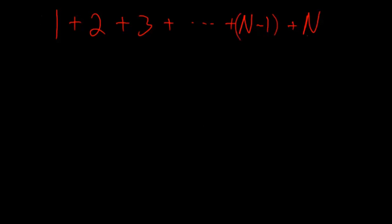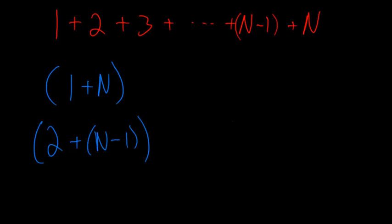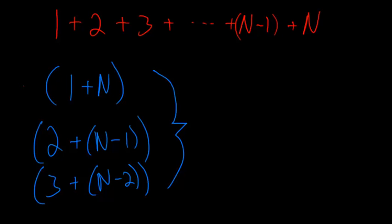So we can use the same idea where we add the first and the last, and the second and the second to last, and so on. So we have 1 plus n, and then we'll add 2 plus n minus 1, then we add 3 plus n minus 2. And we will carry this pattern on and on. So notice, though, that all of these are just 1 plus n.